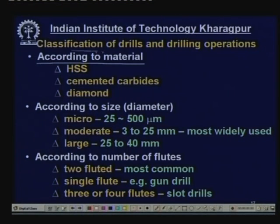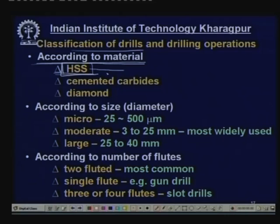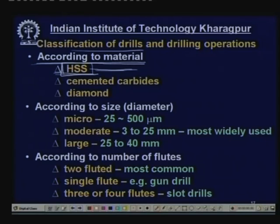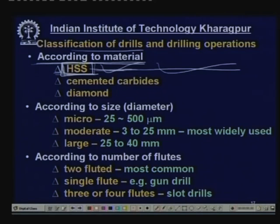According to material: drills can be made of different materials. High speed steel was introduced in 1905 by F.W. Taylor and contains about 18% tungsten, 4% chromium, vanadium, and sometimes cobalt. High speed steel is very tough and strong. Since drills are very slender with complex geometry, the toughness, formability, tensile strength, and transverse rupture strength of high speed steel make it most appropriate. Most drills used in drilling machines are still made of high speed steel today.